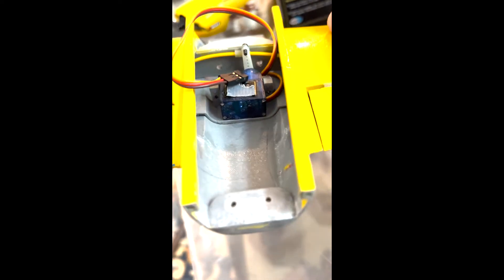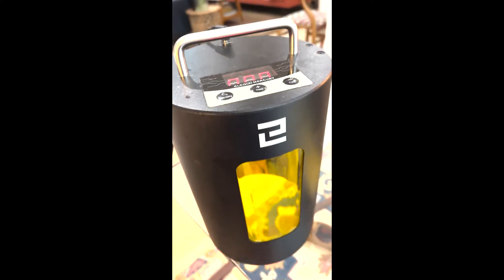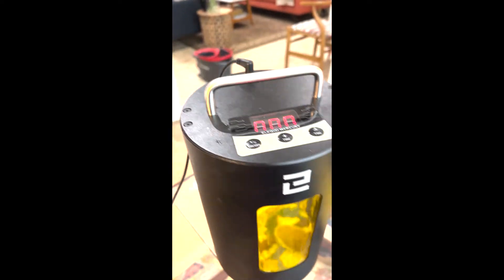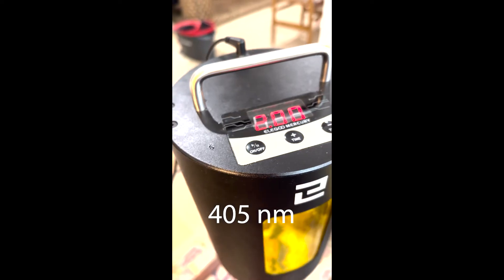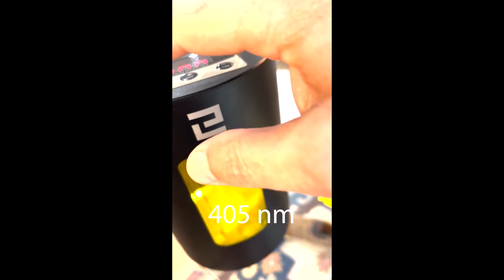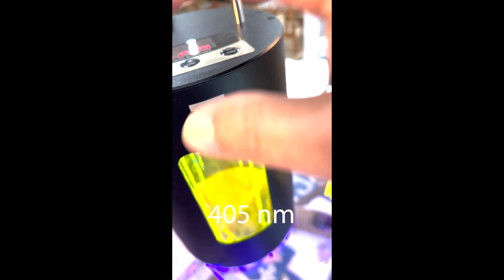So there it is, ready to go, all smoothed out. Now we're going to turn the lamp on. The lamp needs to be a 400 nanometer UV light. Pop that thing on.